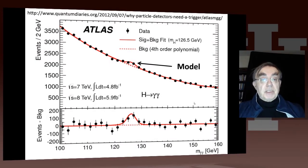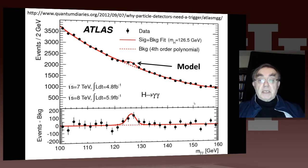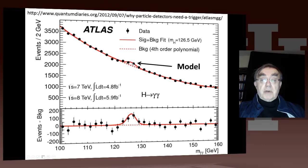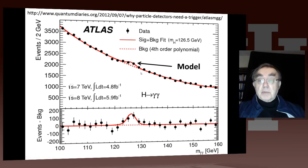Here is one of the famous pictures of the early discovery from 2012 of the Higgs particle. You can see the Higgs particle is this bump here. The dots are the experimental measurements, and the red lines are a model. In this type of experiment, you do a very simple model, so-called background plus signal.